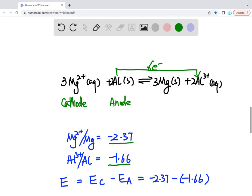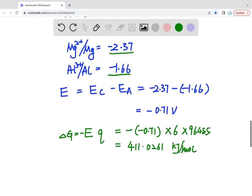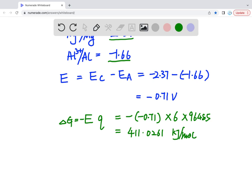So looking at this reaction, 2 aluminum becomes 2 aluminum 3+, 6 electrons were transferred. So here, it's 6 times Faraday constant, 96485, and then you get the answer, which is 411.0261. And that's it.